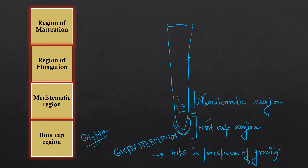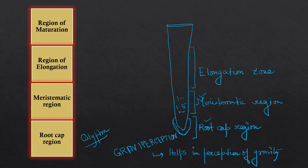Then we move on to the zone of elongation. This region lies above the meristematic region and helps in root elongation. The cells in this region have lost the power of division; they do not divide, but they help in elongation of the root.